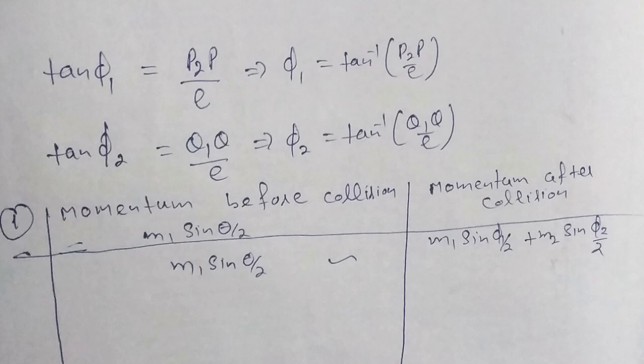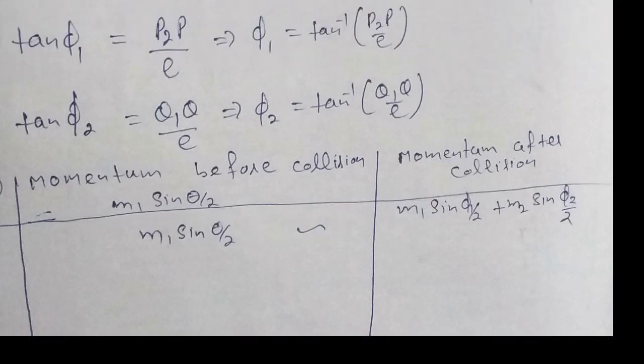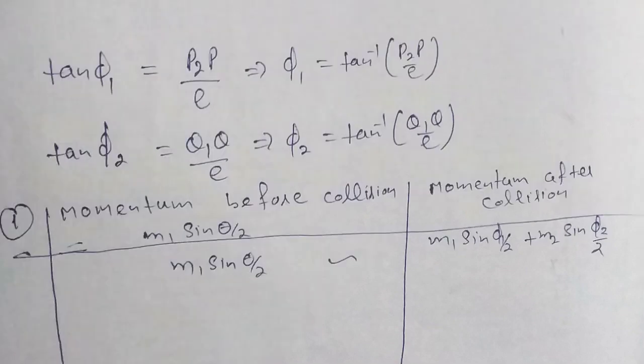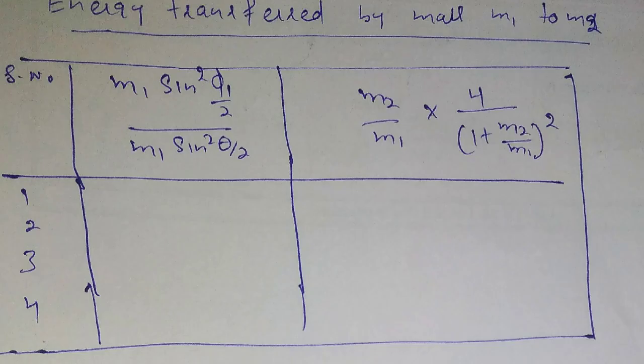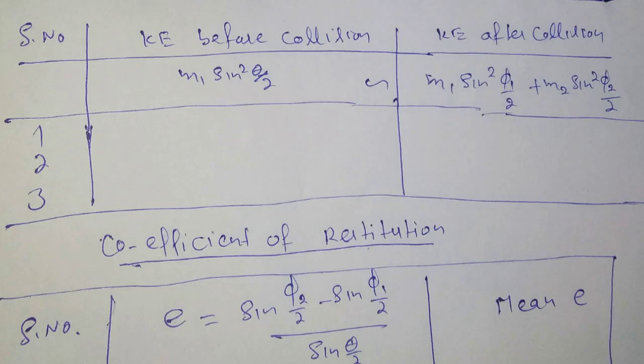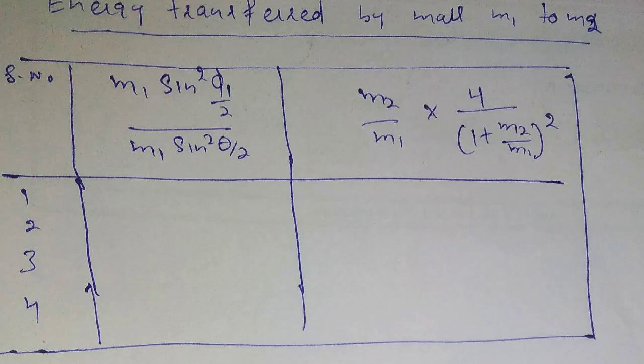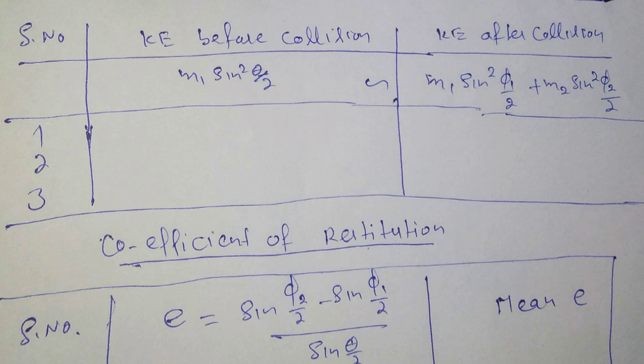find phi1 and phi2 and use these values in the given table to verify momentum and kinetic energy are conserved or nearly conserved. Find the values of the coefficient of restitution. If coefficient of restitution e equals 1, collision will be perfectly elastic.